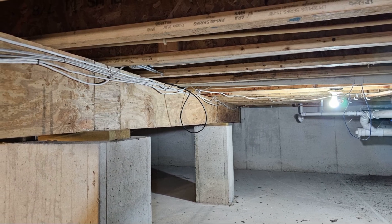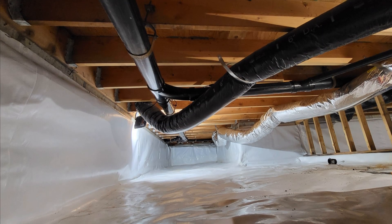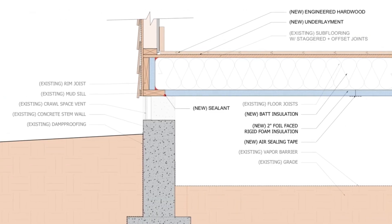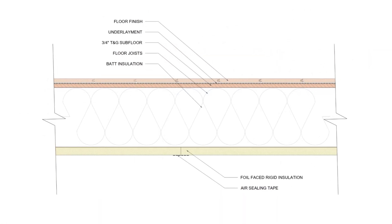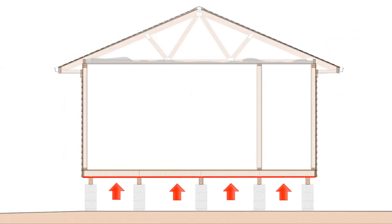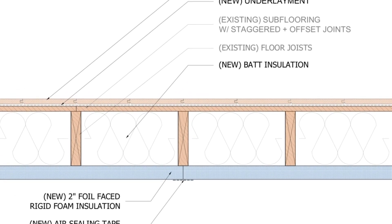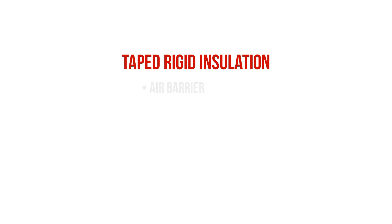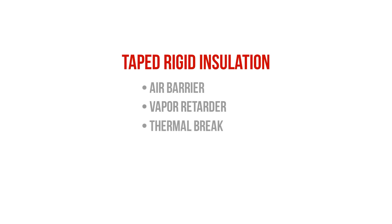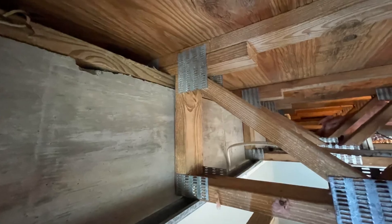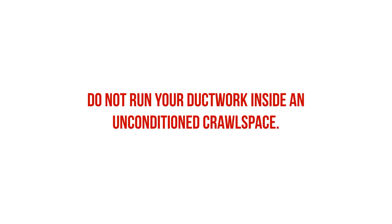We want to condition our crawl spaces so that they're insulated, air-sealed, and waterproofed, so that they're part of the interior shell and receiving conditioned air just like a basement. If we have to have a vented crawl space, we want to make sure that we're completely uncoupling the floor system from the crawl space with an air barrier so that we don't get moisture-laden air migrating up into the floor assembly. Typically we accomplish this by using foil-faced rigid insulation with taped or sealed joints, which provides the benefits of an air barrier, a vapor retarder, and will help to bolster the thermal resistance of the floor system. You also need to make sure that the ductwork and HVAC system is completely located within the conditioned space — you cannot run your ductwork in an unconditioned crawl space.